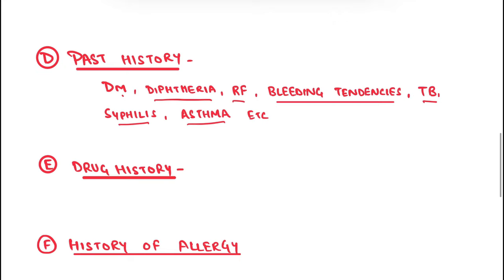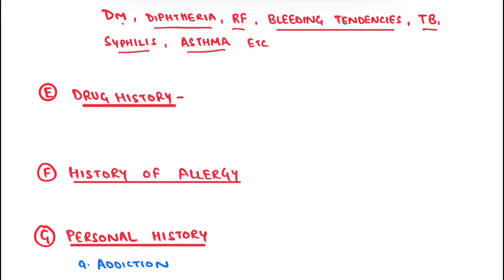Coming to drug history — the patient should be asked about all the drugs they were on. For example, whether they are on steroids, insulin, antihypertensives, diuretics, or their derivatives. If a female patient presents, you can also ask about oral contraceptive pill intake. Drug history is an important part.